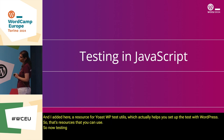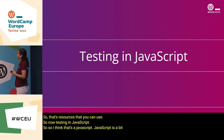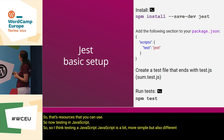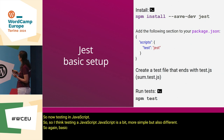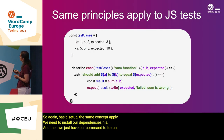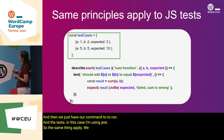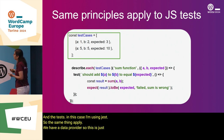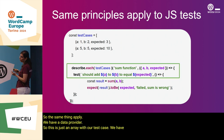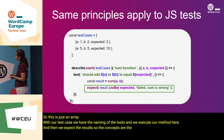Now, testing in JavaScript. Testing in JavaScript is a bit more simple but also different. The same concepts apply for basic setup — install your dependencies and run your command. The tests in this case use Jest. We have a data provider — just an array with test cases — we have the naming of the tests, we execute our method, and then we expect the results. The concepts are the same, just a different syntax.